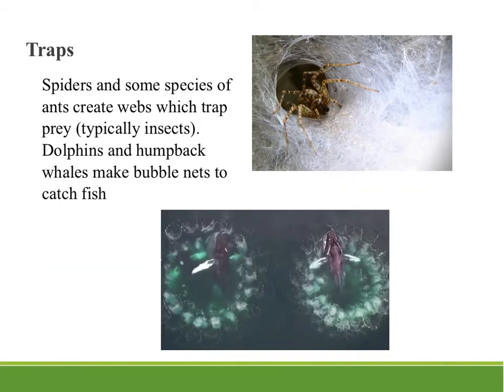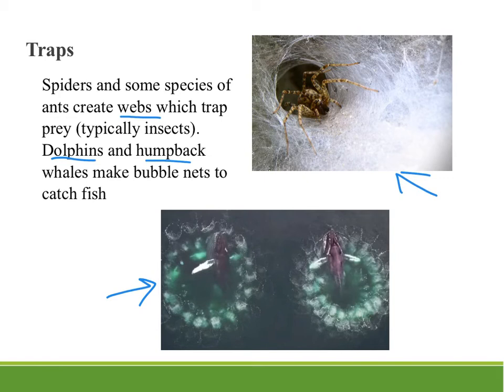The last category is traps. Spiders and other species create webs to trap insects — here we have a funnel web, much more extensive than the typical spider webs we see. Some mammals in the ocean, both dolphins and humpback whales, will make bubble nets to catch fish or krill. Here two humpback whales are making a bubble net to trap krill in the center, and then they come up with their mouths wide open — you can see the whale body right here with its flippers out — and just take a mouthful of their dinner.